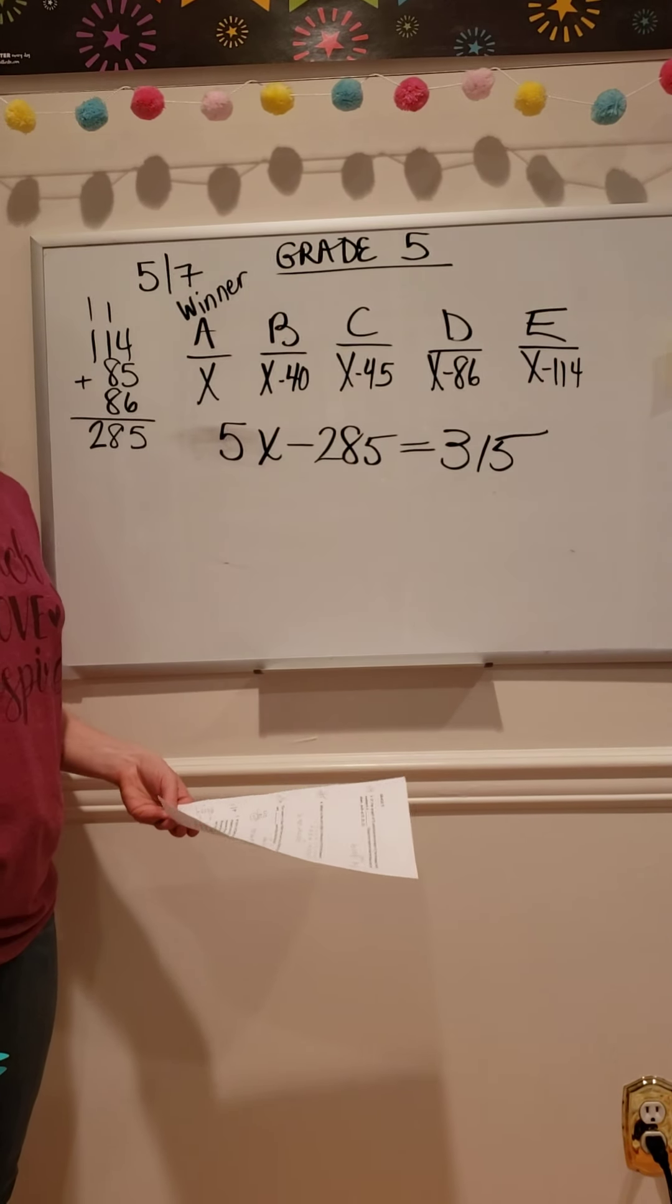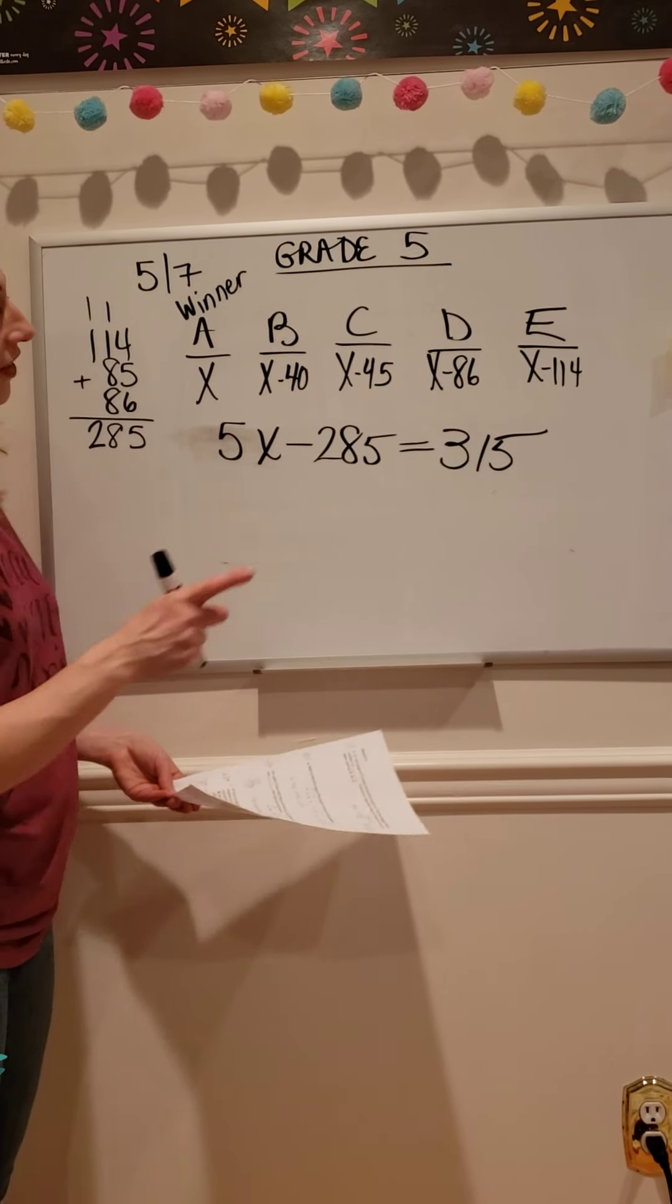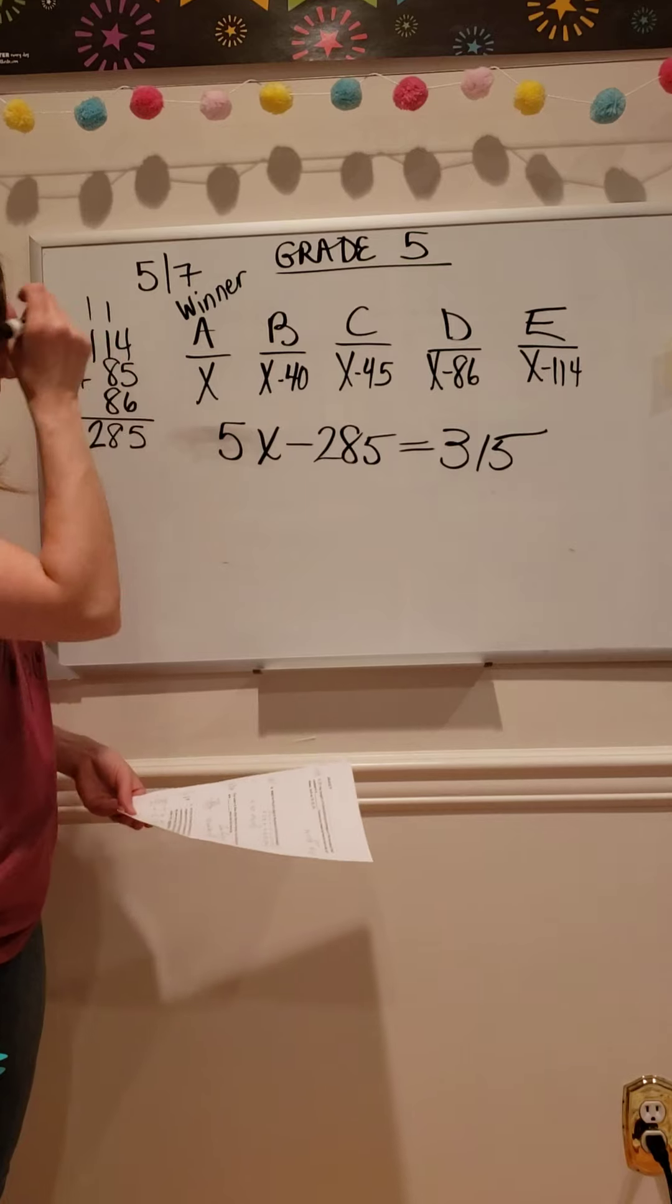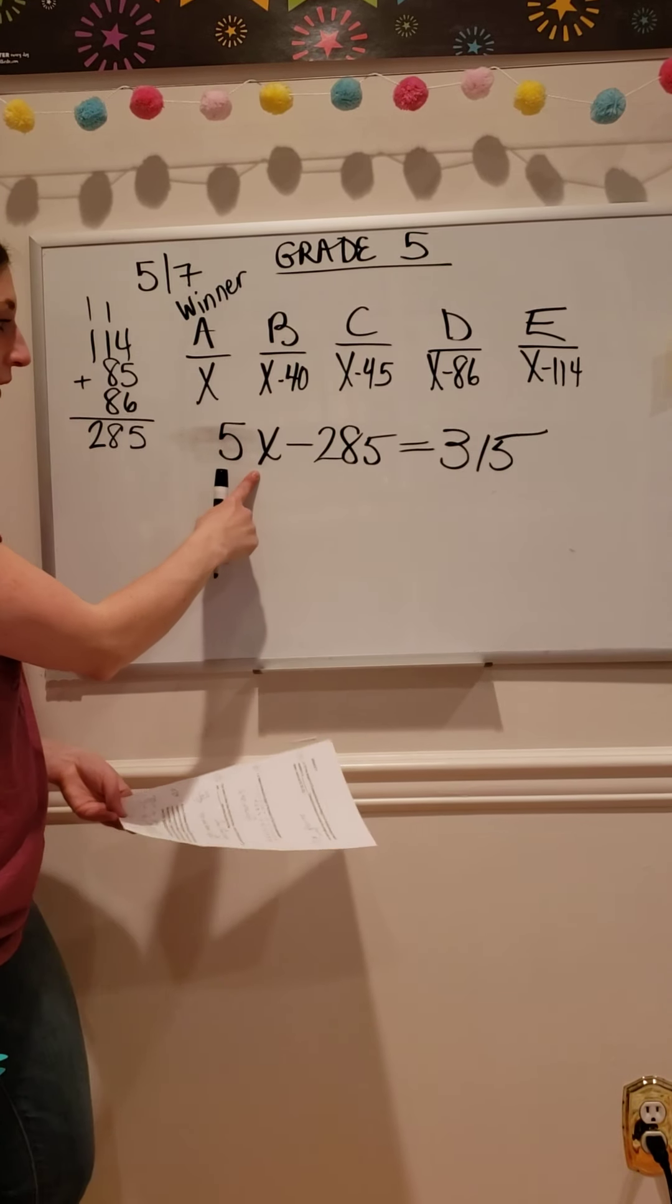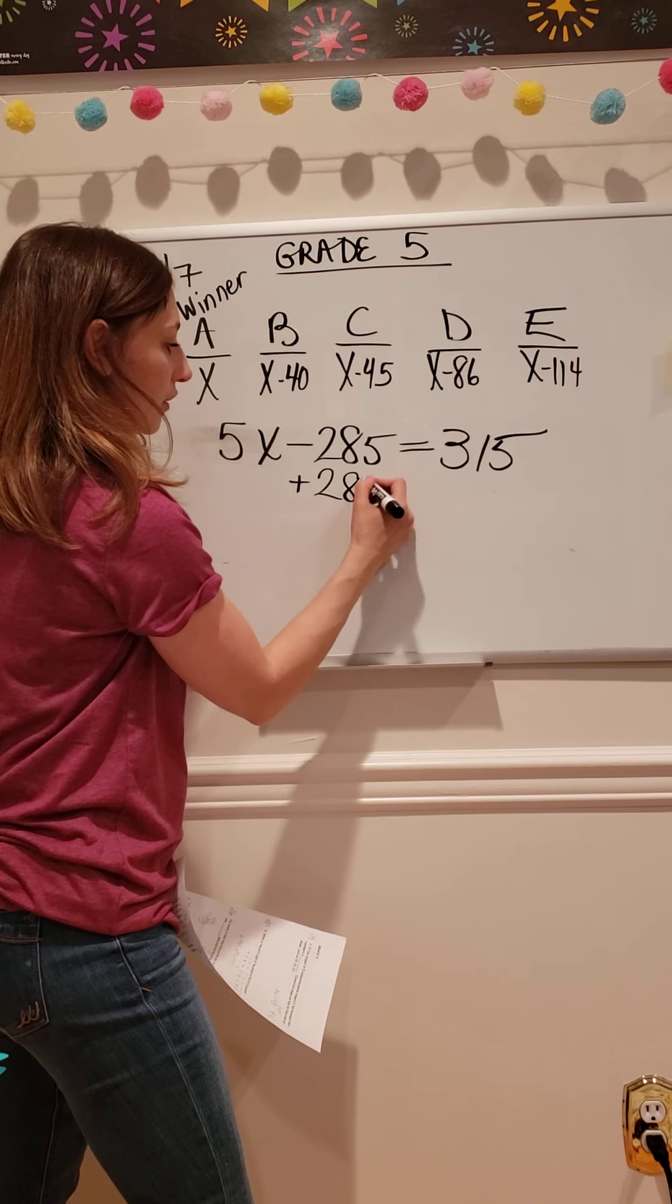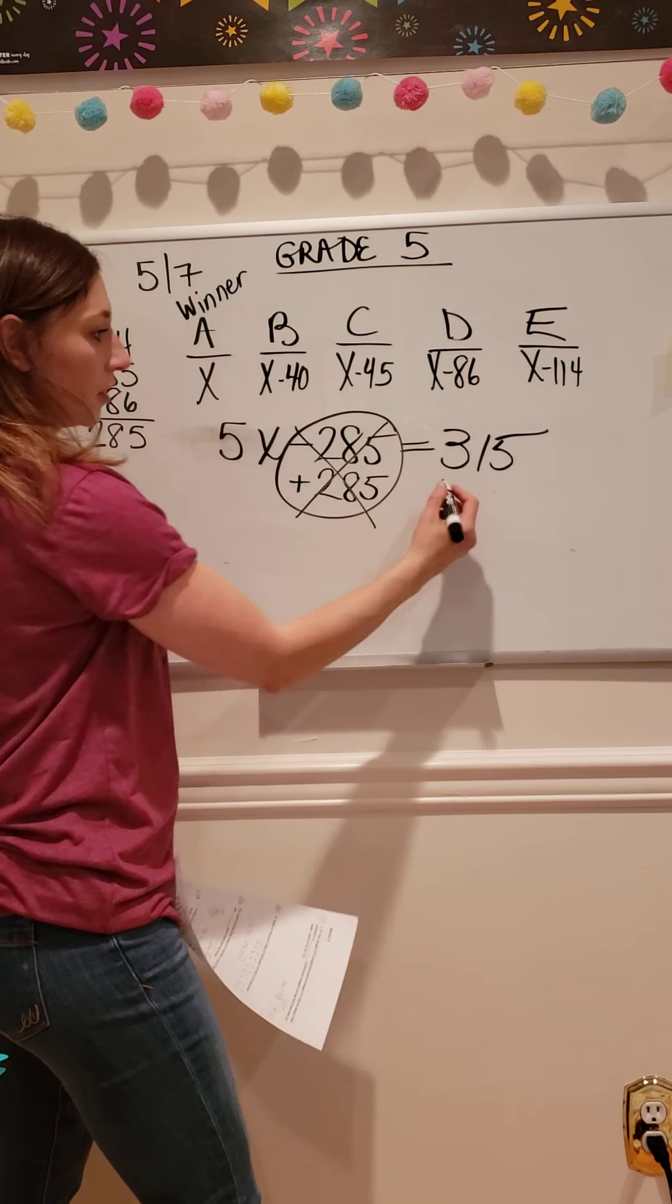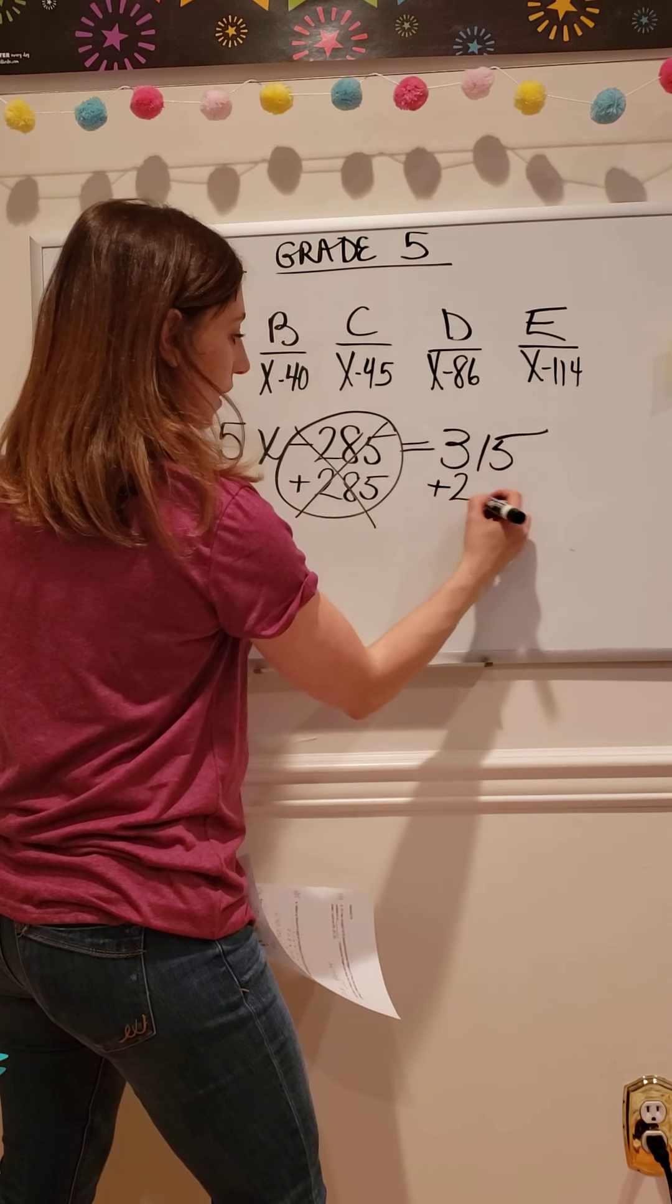So now I have to figure out what that X stands for by trying to get it by itself. In order to do that, I'm going to add 285 here because doing the opposite cancels it out. But I'm going to do the same thing on both sides of the equal sign.